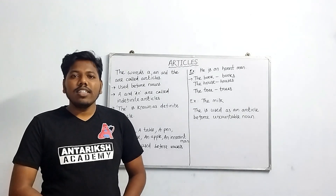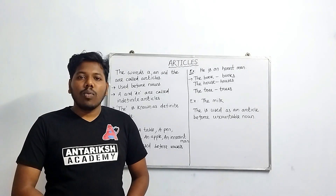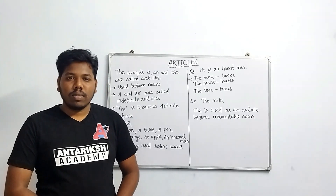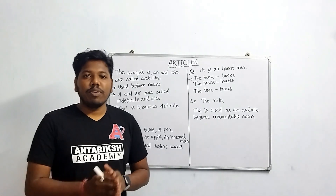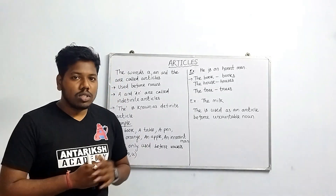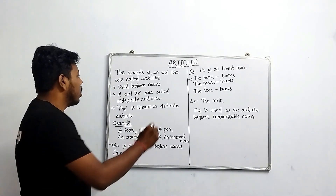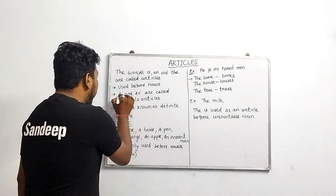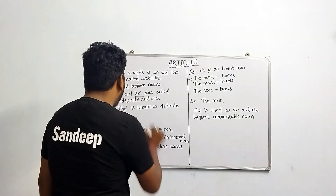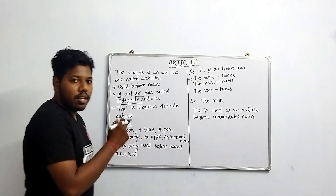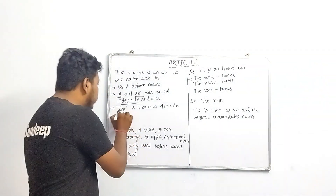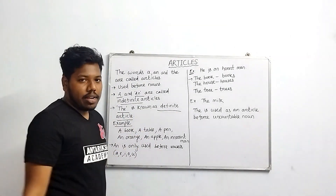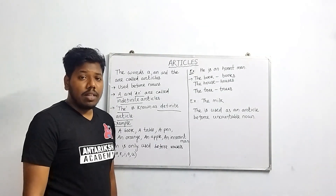Articles are the words 'a', 'an', and 'the', which are used before nouns. 'A' and 'an' are called indefinite articles, and 'the' is a definite article.